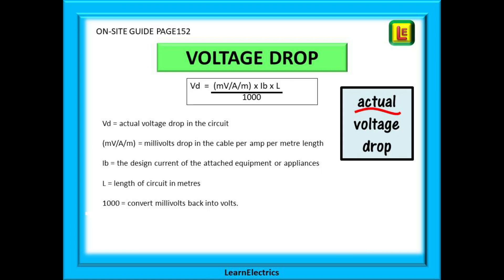Now we can look at the actual volts drop and compare this to the maximum permitted values. The very simple formula is shown here. VD is the actual volts drop in the circuit. And this funny symbol MVAM is the millivolts drop in the cable for every amp of current flowing through every meter of the circuit. IB is the design current of the attached equipment or appliances. How much current has the manufacturer designed it to use. And L is the length of the circuit in meters.